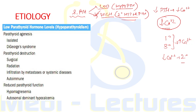Although there are many potential causes of hypocalcemia, the most common cause is impaired PTH production, that is hypoparathyroidism. This leads to decreased vitamin D levels due to inability to activate vitamin D in the kidney, ultimately leading to hypocalcemia.